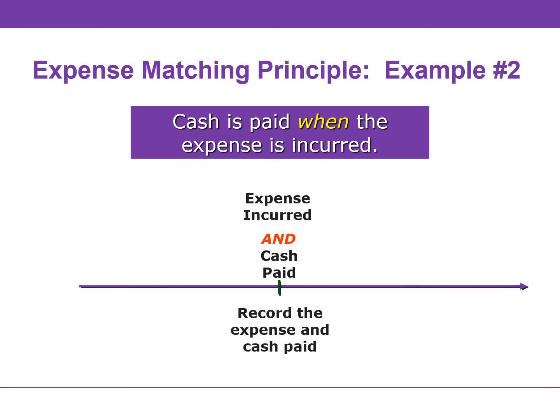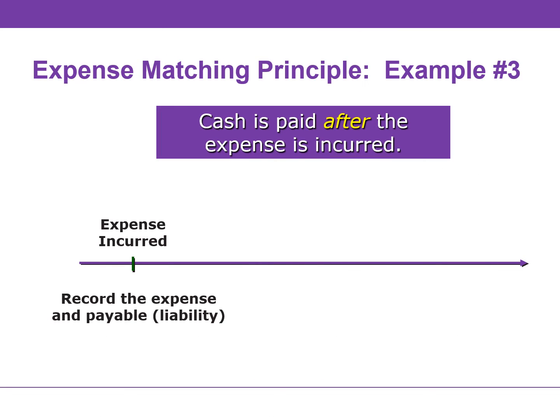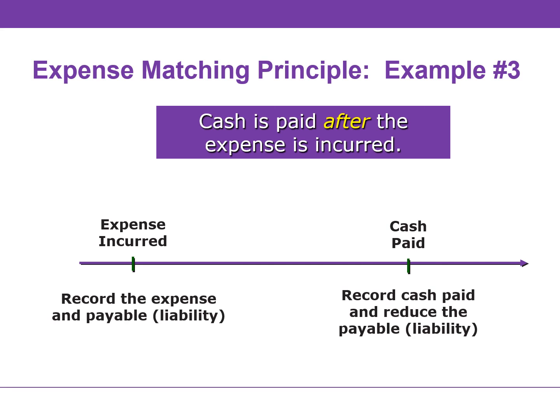If cash is paid at the same time we are incurring an expense, it's fairly simple — we record both the expense and a decrease in cash. When cash is paid after the company incurs an expense, a liability account must be established. We need to record the obligation that exists as well as recognize the expense. When the cash is actually paid, we record the cash paid by decreasing cash and also reducing the payable or liability. If we pay the liability, the obligation no longer exists.